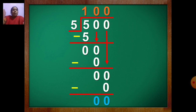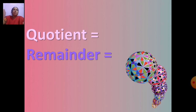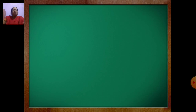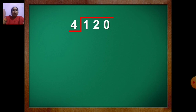Now write quotient and remainder. What is the quotient here? 100. And remainder? 0. Now next question: 120 divide by 4. Here also first draw the line and write the number. 120 inside, 4 out. Take one number first. The divisor is 4 and the first number is 1. Now 1 is small and 4 is big — you cannot divide.